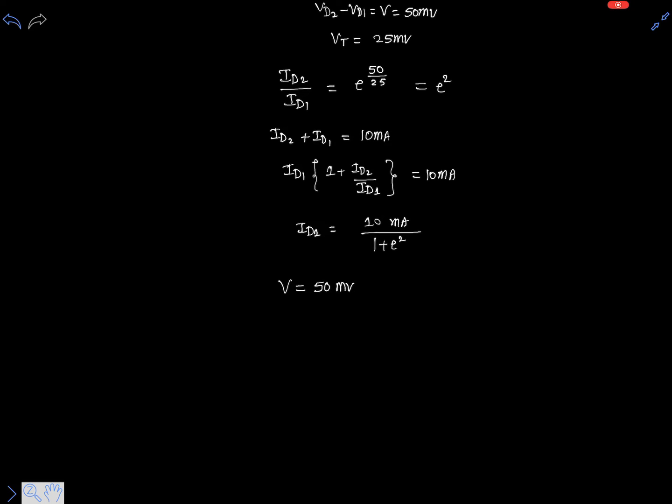So ID1 is clearly 10 milliamps divided by 1 plus e square. And V is already given in the question, that is 50 millivolts. We can write this as ID1 multiplied with R, because this diode D1 and this resistor R are in series connection, so both will have the same current flowing through them.